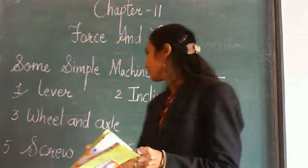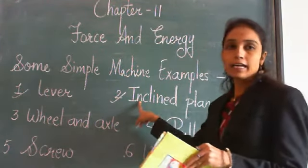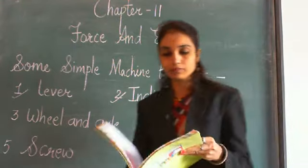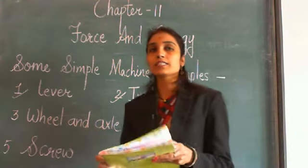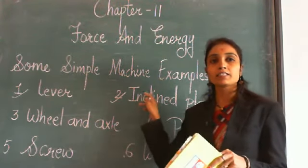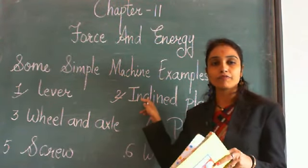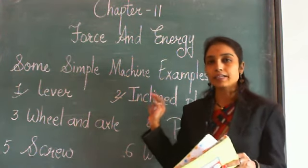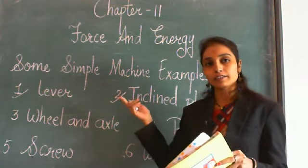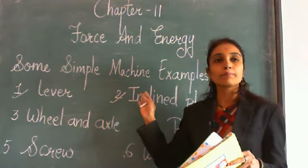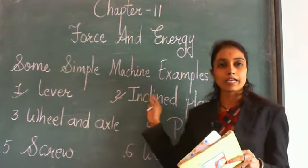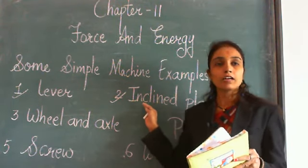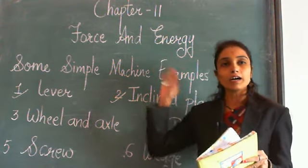The second simple machine is the inclined plane. An inclined plane is a sloping surface with one end higher than the other. For example, a staircase, slide, and a road moving uphill.